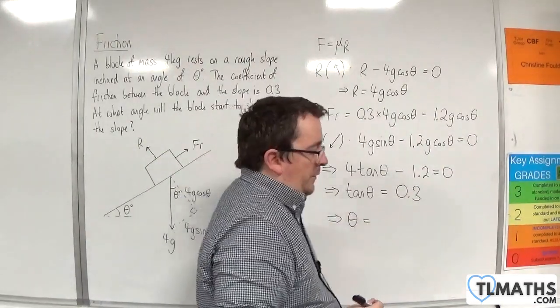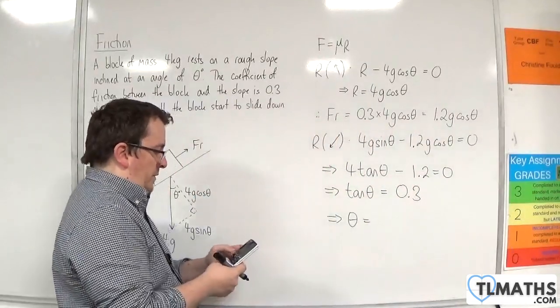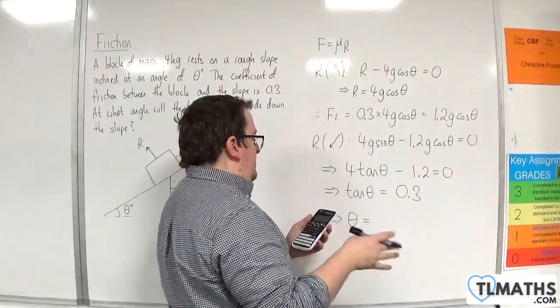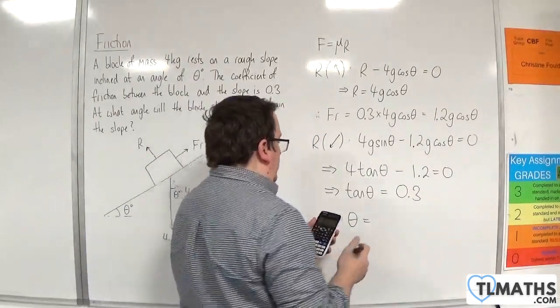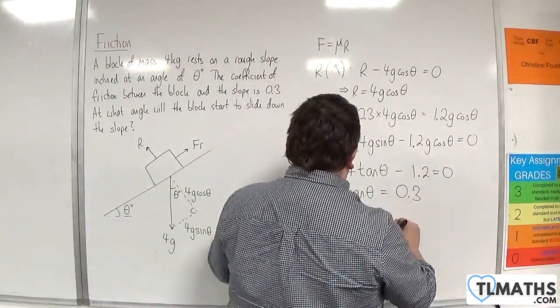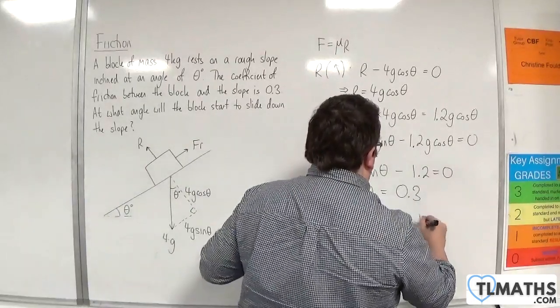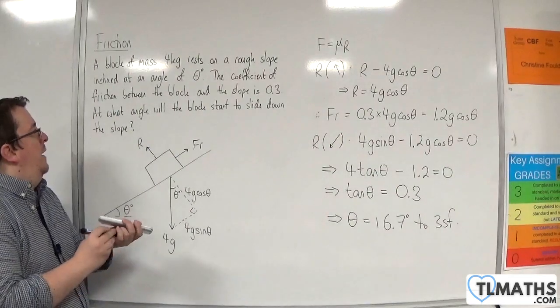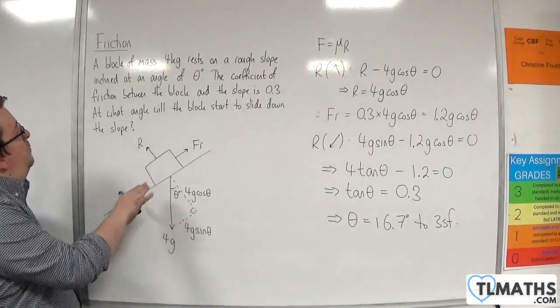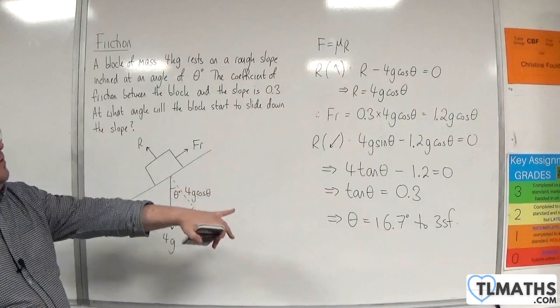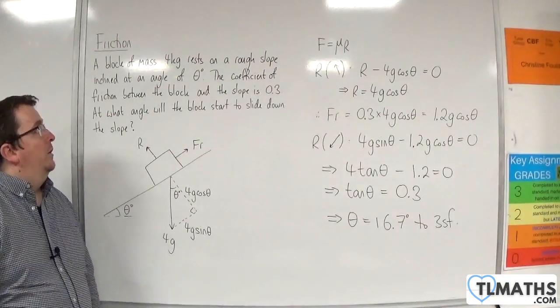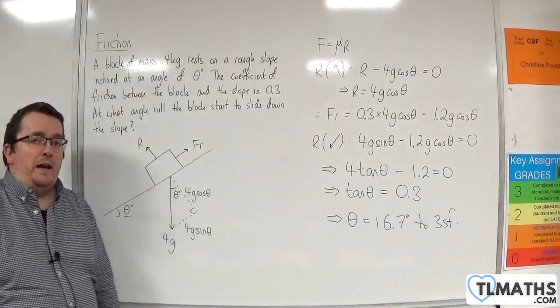So the inverse tan of 0.3 is 16.69924423 degrees. So 16.7 degrees to 3 significant figures. So if we raise the slope up, the point where it goes over 16.7 degrees, the block will start to slip down the slope.